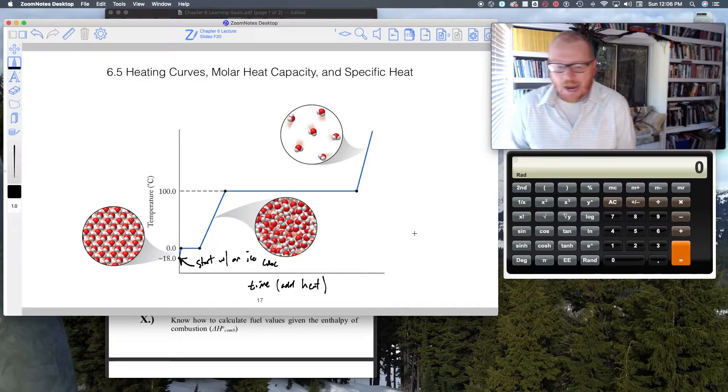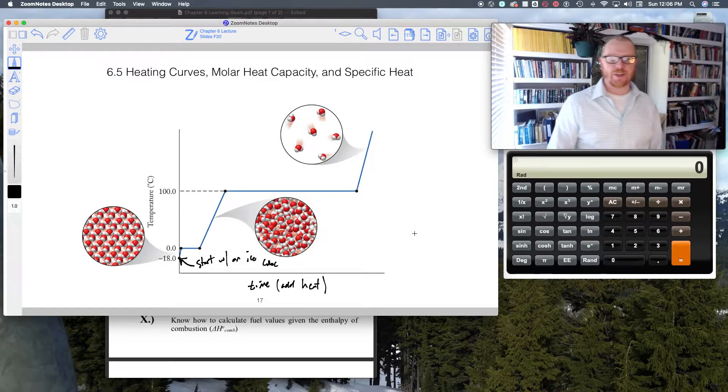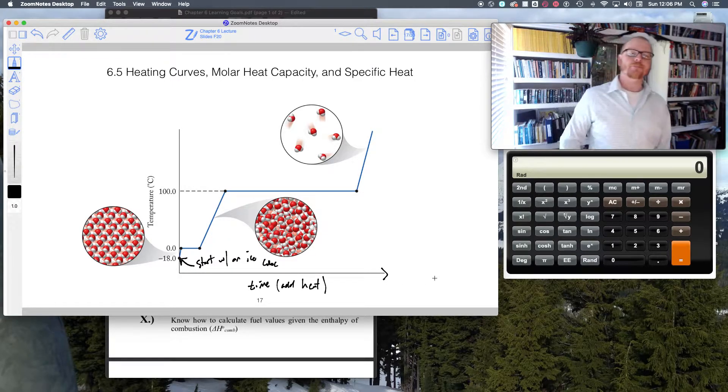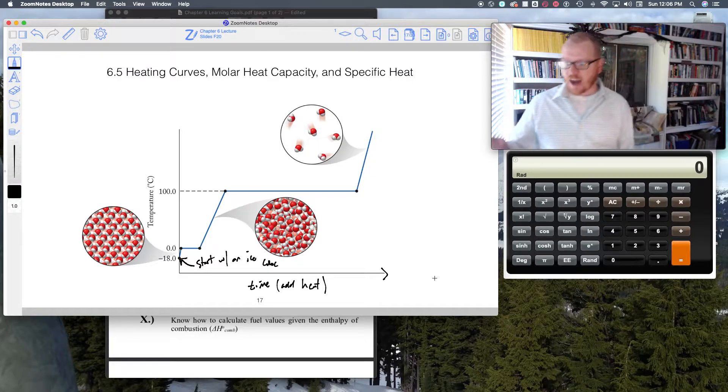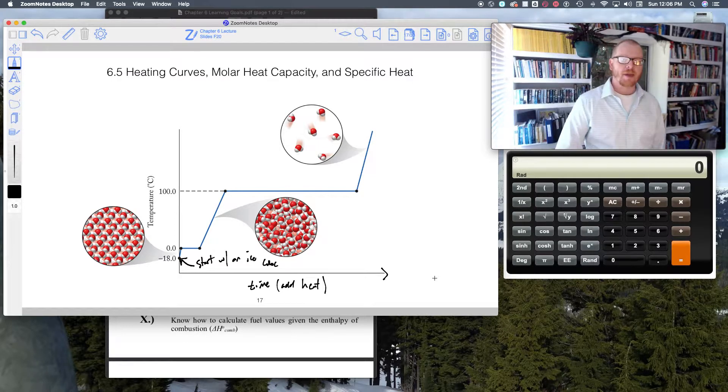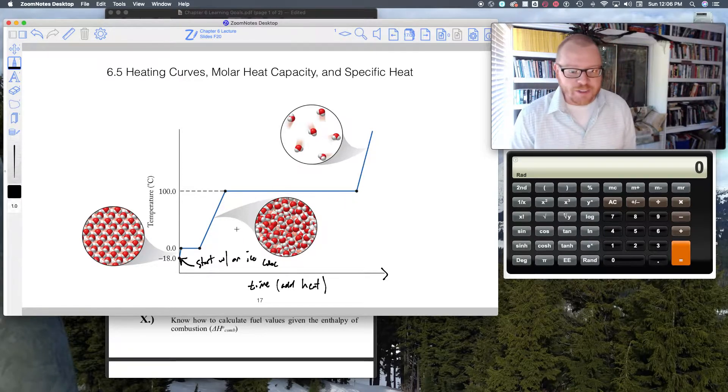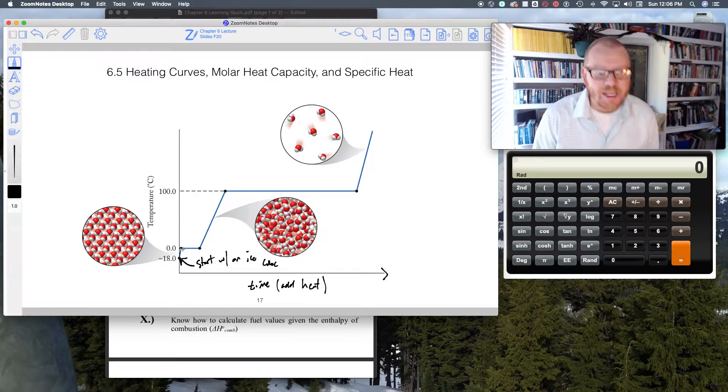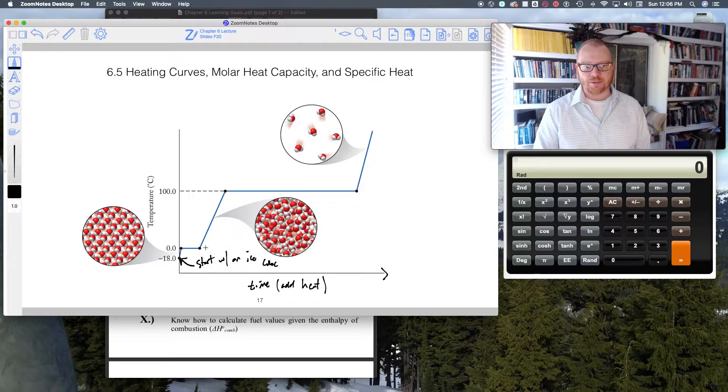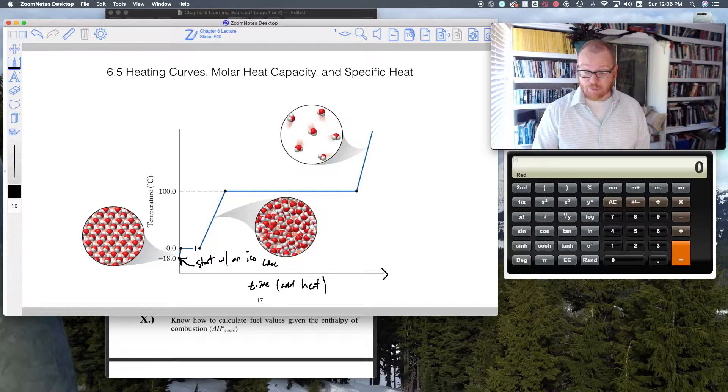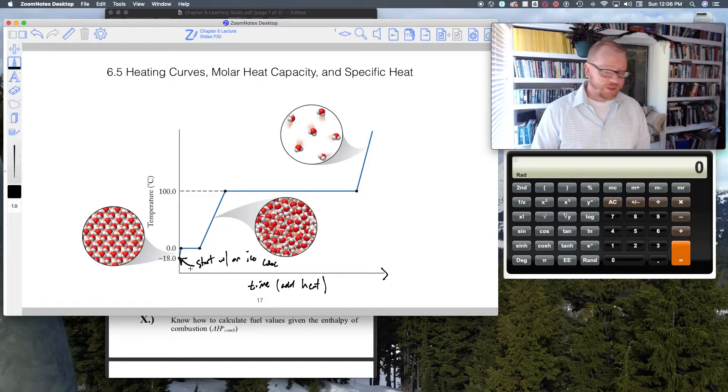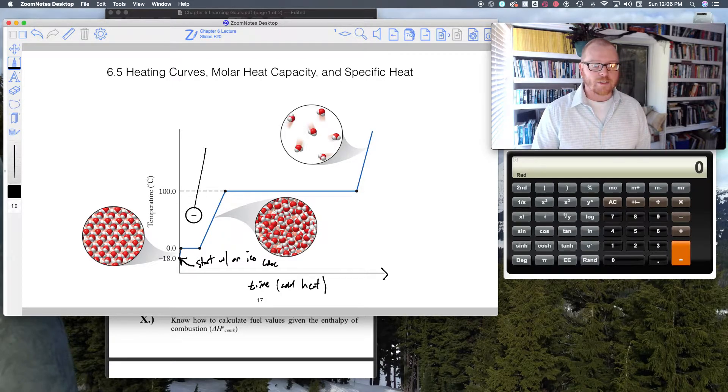On this x-axis here, we add heat steadily over time. You can view this as we're progressing this way, our material is getting hotter and hotter and hotter. Here is the temperature of our material. You notice that it hits this plateau at zero degrees and will remain at that plateau for a period of time.